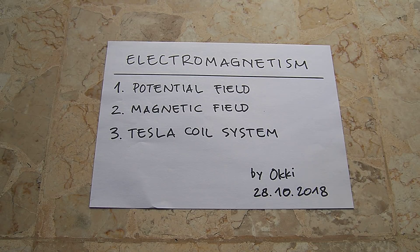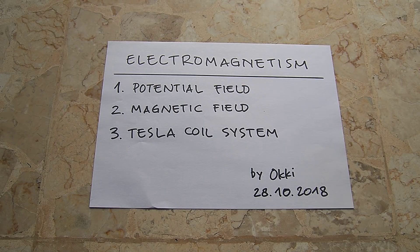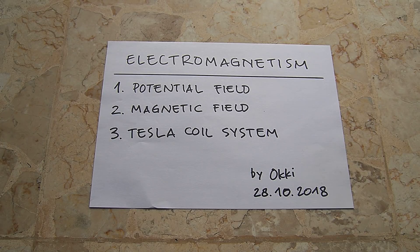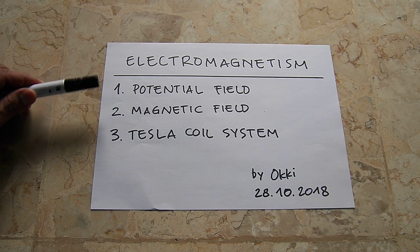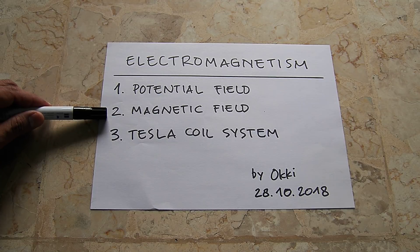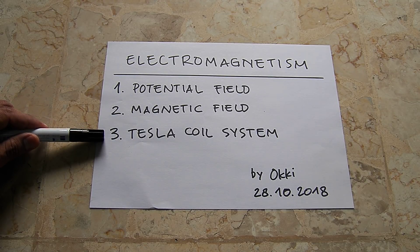What we do have are potential field and magnetic field. They are two different things but coexist together — you cannot see them both at the same time, just like two faces of a coin. You will see one side or the other at a time. I will split my explanation in three parts: first, potential or electrical field; second, magnetic field; and third, Tesla coil system.